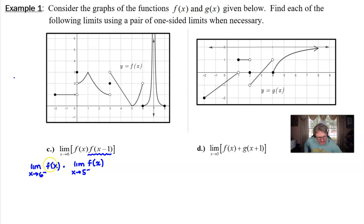So the limit of f of x as x approaches six from the left, no problem there, that's going to have a value of two and the limit of f of x as x approaches five from the left, no problem, we've got a value of zero and of course that product is going to be zero.